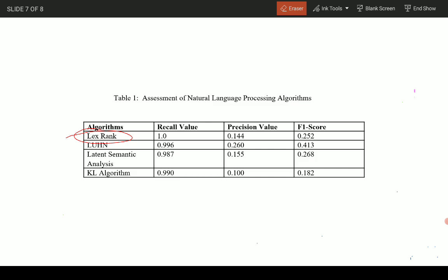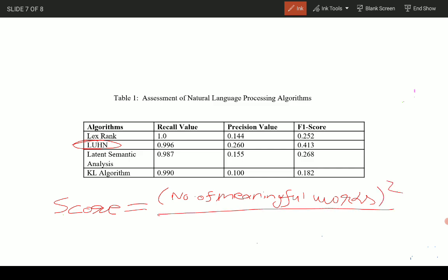Now coming to the Luhn algorithm. Luhn algorithm is based on the heuristic approach and is one of the earliest methods which was used for summarizing text files. The mechanism of the Luhn algorithm is based on the selection of higher importance words on the basis of their frequency distribution and further assigning higher rates to the words which are mentioned in the beginning of the text file. The score assigned to a sentence is calculated by this equation: number of meaningful words squared divided by span of meaningful words.